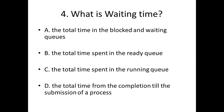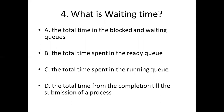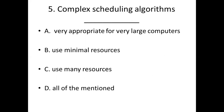Fourth bit. What is waiting time? Option A: The total time in the blocked and waiting queues. Option B: The total time spent in the already queue. Option C: The total time spent in the running queue. Option D: The total time spent in the running queue. Answer: Option B, the total time spent in the already queue.